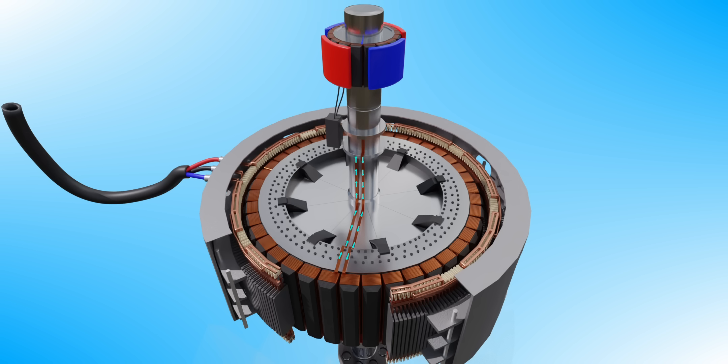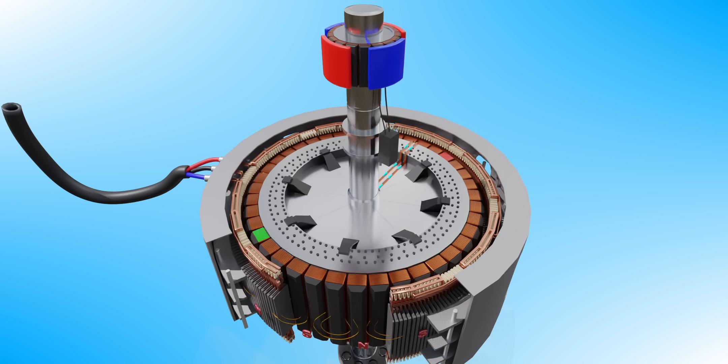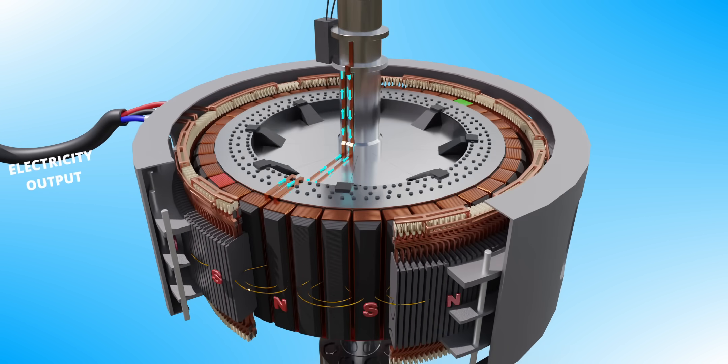This electricity is fed to the rotor coil of the generator. The generator rotor can now produce a magnetic field, and the magnetic field will cut the stator coils. The result is power production at the stator side.